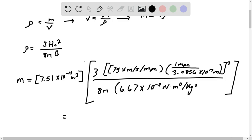And we have 7.94 times 10 to the negative 30 kilograms.